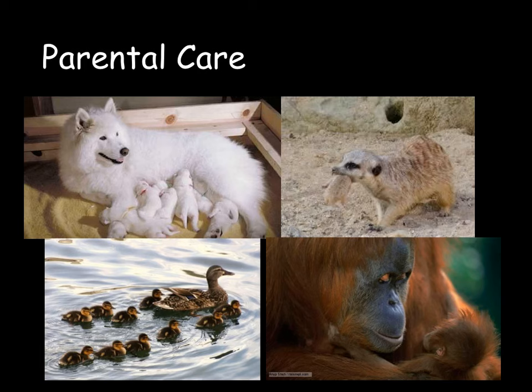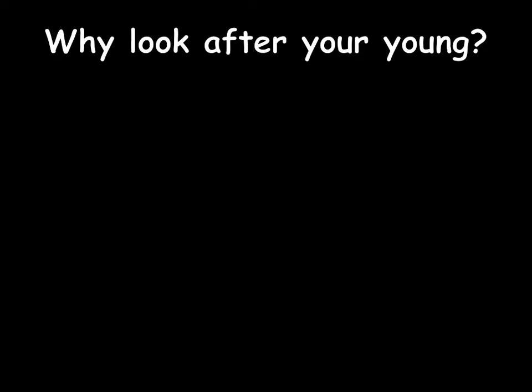As we looked at in the previous video, some animals will teach their offspring the tools they need to survive. For example, in humans we will teach our offspring how to dress themselves as well as how to use a knife and fork in order to eat. Other animals will teach their offspring how to hunt, how to stalk their prey, or even how to open a nut or seed.